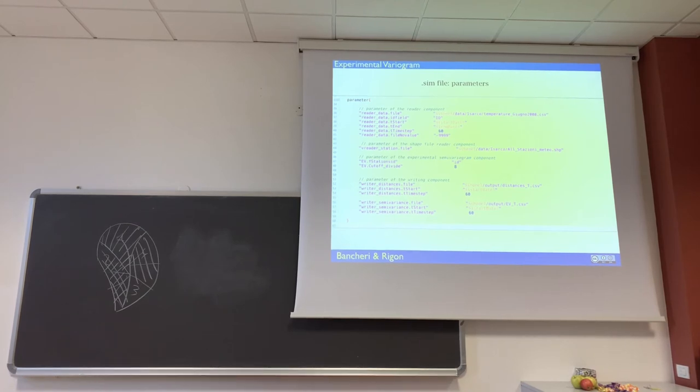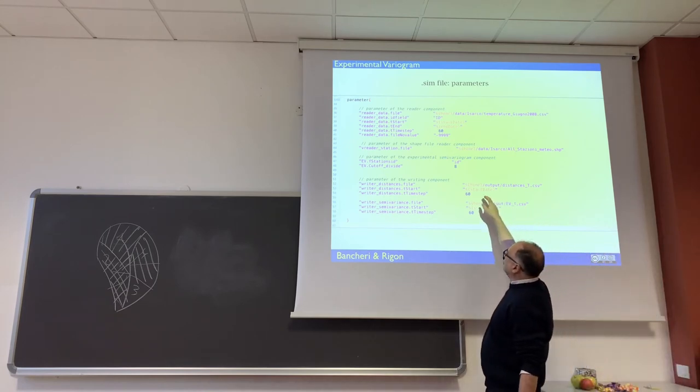And the null value in the data is minus 99999. The shape file of the station, which is also in the reader, the station ID of the station. And the other was the ID of the data. The top divide, frankly I don't know what it is.